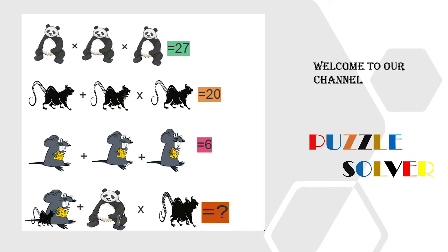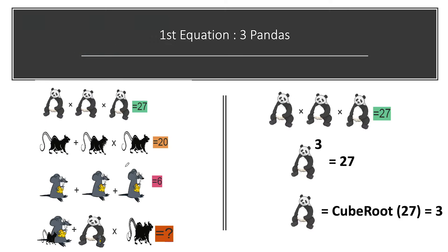Three, two, one, stop. Hope you all enjoyed solving this puzzle. Let's begin the complete solution. In the first equation, we have three pandas with a multiplication sign between them, equal to 27. Solving this, panda cubed equals 27, so panda equals the cube root of 27, which is 3. From the first equation, panda's value is 3.